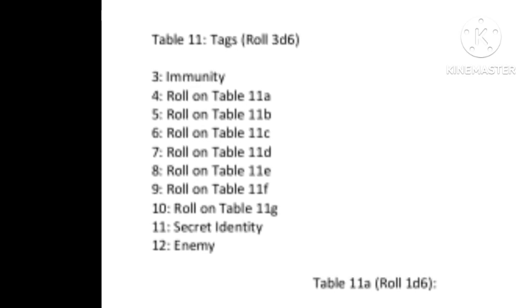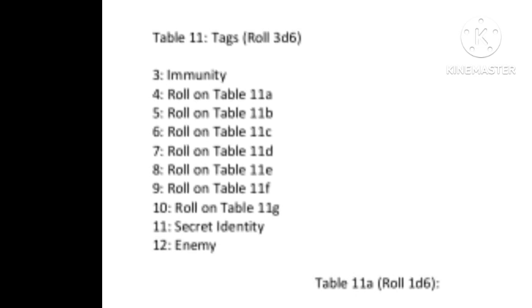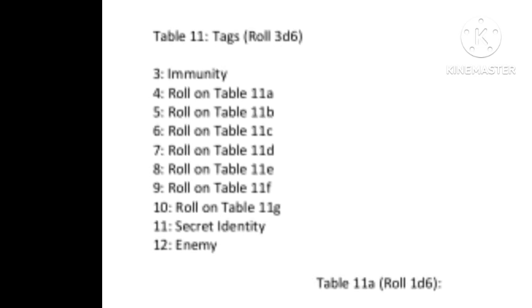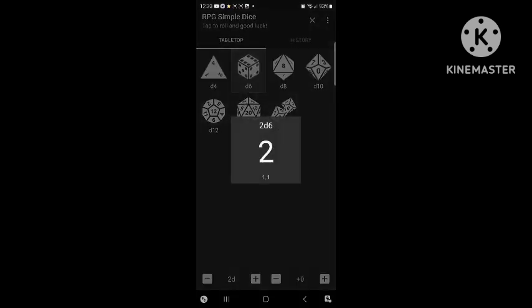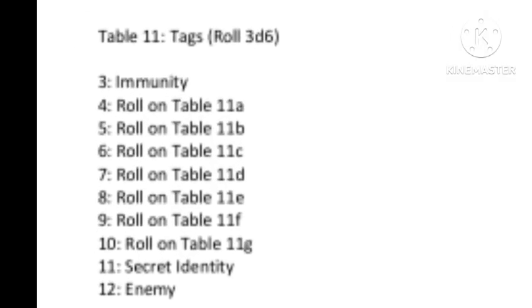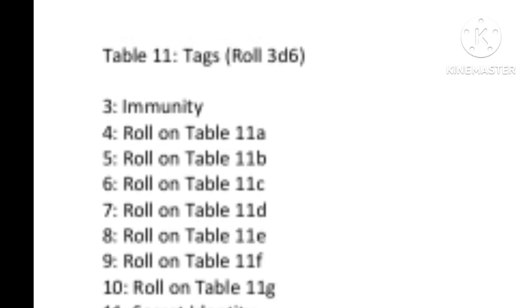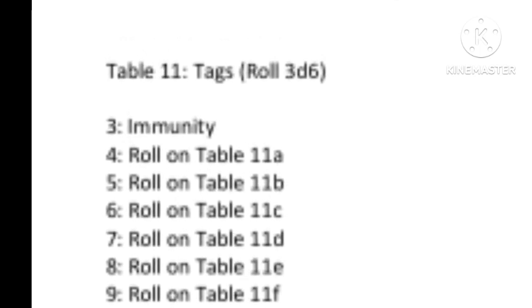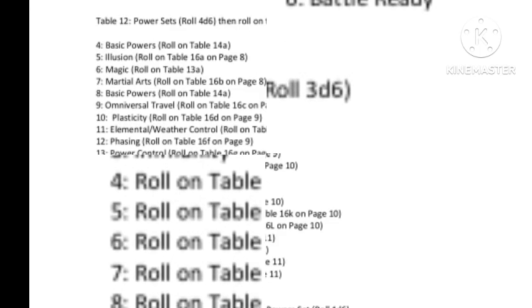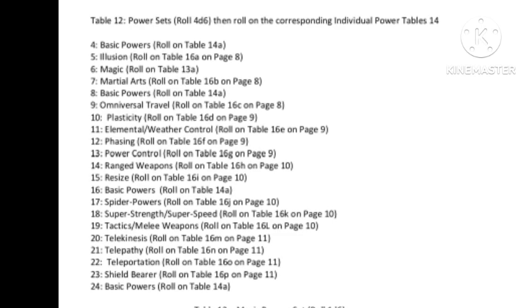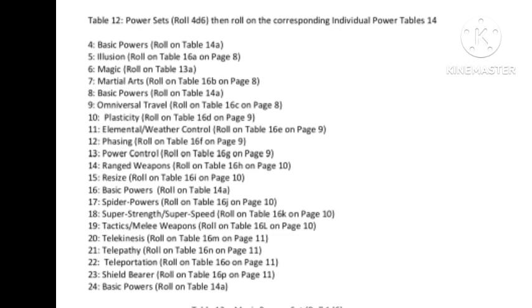We're going to roll for our last tag. We get a 2 — there was a mistake on this chart that I'm going to fix before the download — and it means he gets some kind of immunity, which is really interesting. So if he's an elemental, maybe I'll make him a water elemental and he'll be immune to fire or something.